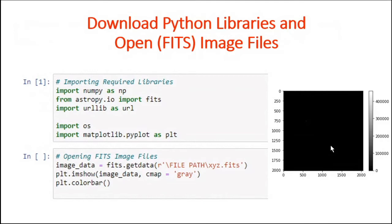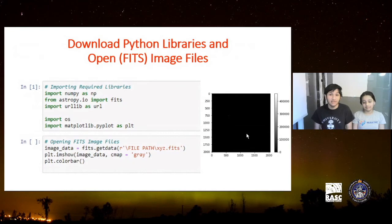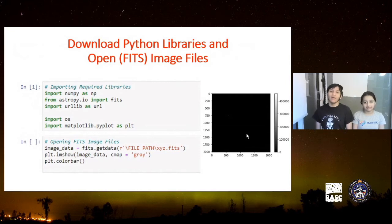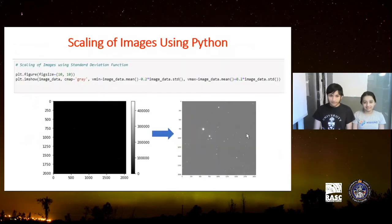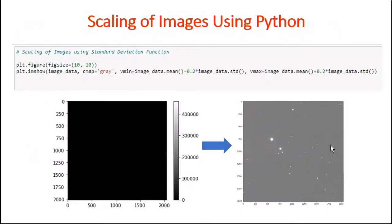I opened the FITS file using a library called astropy, which is really useful for astronomical data, and I displayed the image on the right. Once again, just like before, I also got a black screen with very few stars — just one dim object to the upper left. So my second step was to scale the image pixel values so I could actually see objects inside it. I did this based on the standard deviation and the mean of the image. On the right, you can see the scaled image, which has much more objects inside it.